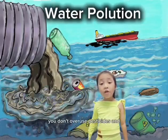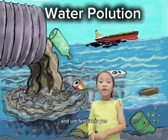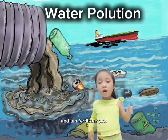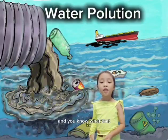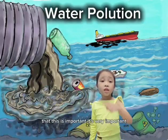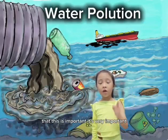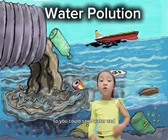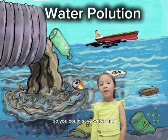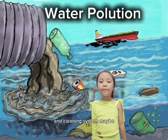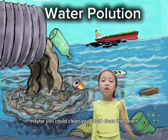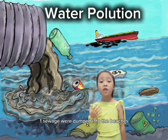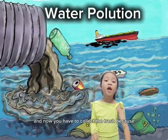You don't overuse pesticides and fertilizers. This is very important. You need to turn off the running tap so you could save water, and maybe you could clean the beach. All the cities — when sewage was dumped into the beaches, you have to collect the trash.